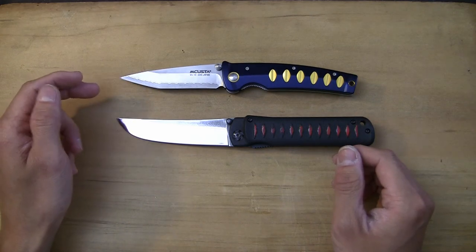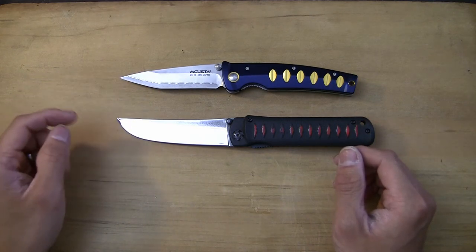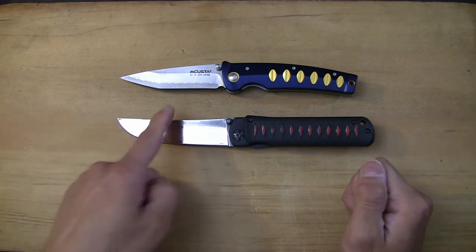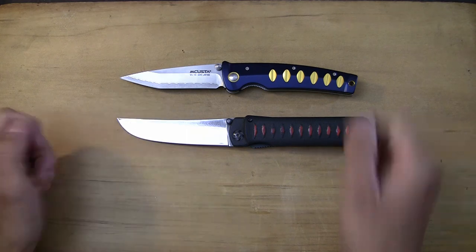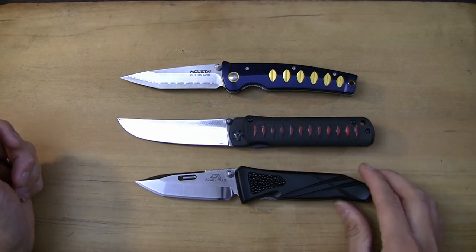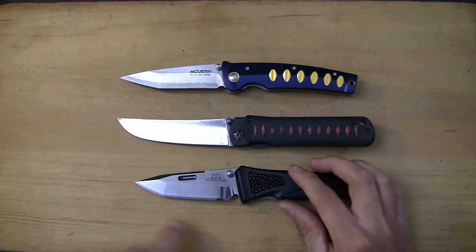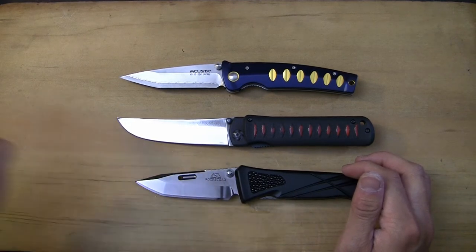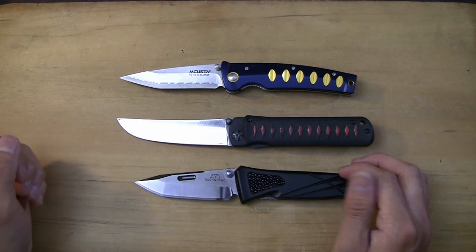This is a more Japanese Tanto. This does have a secondary point here, as well as the Rockstead Chi here - it does have a slight secondary point. But this is a more gradual curve. This has no point at all, it's just a whole upswept edge, trailing point style of a knife. So this is a very fluid design and I really like the style of it, I really like the looks of it.